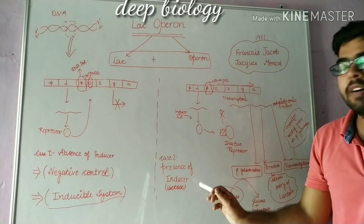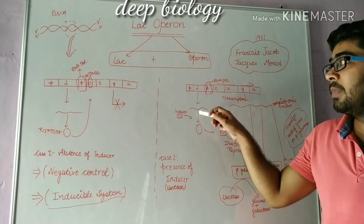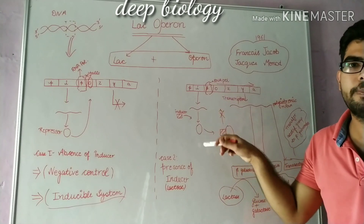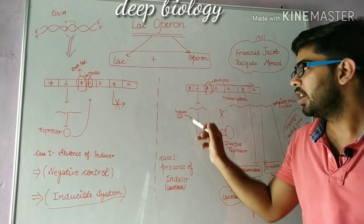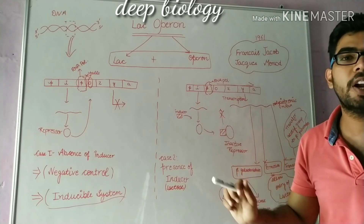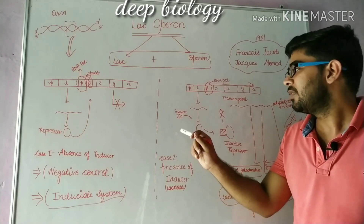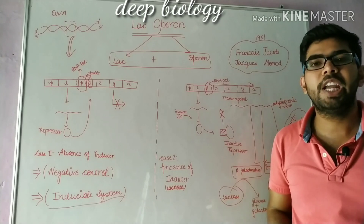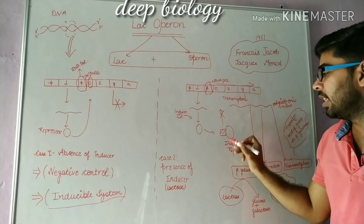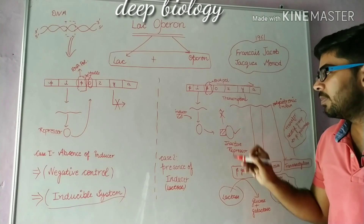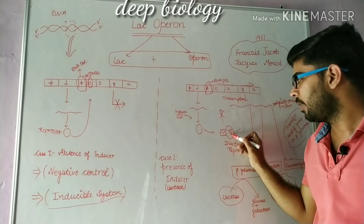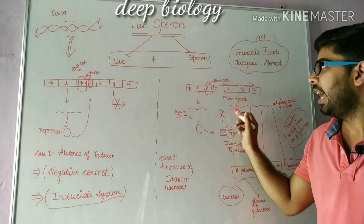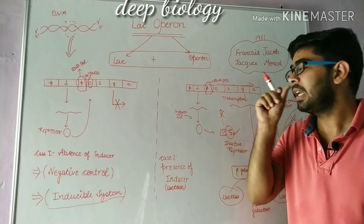The second condition is the presence of an inducer. The regulatory gene will encode repressor mRNA, then it will encode repressor protein. When there is the presence of an inducer in the surrounding of the prokaryotic organism or E. coli, it will enter into the cytoplasm and bind to this repressor protein. This causes conformational changes in the repressor protein, and that's why the repressor becomes inactive.